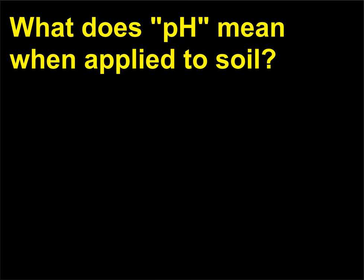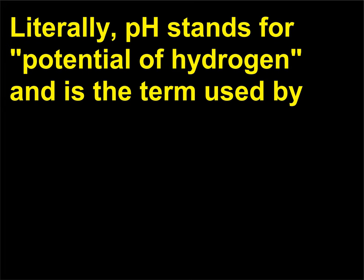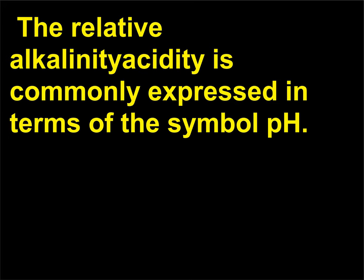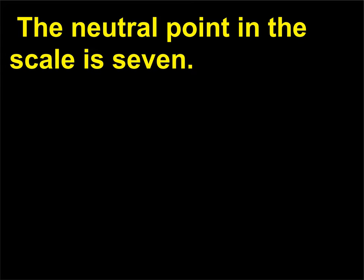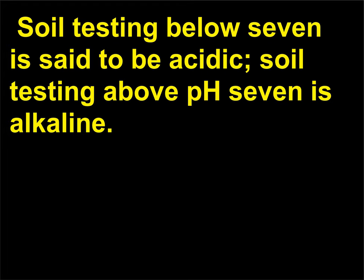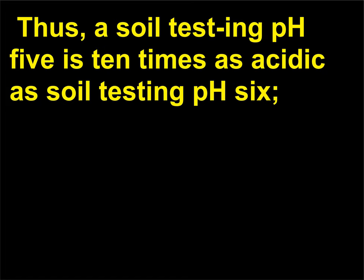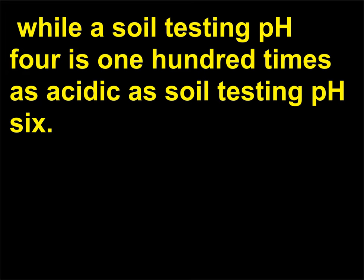What does pH mean when applied to soil? pH stands for potential of hydrogen and is the term used by soil scientists to represent the hydrogen ion concentration in a soil sample. The relative alkalinity or acidity is commonly expressed in terms of the symbol pH. The neutral point in the scale is 7; soil testing below 7 is said to be acidic, while soil testing above pH 7 is alkaline. The pH values are based on logarithms with a base of 10. Thus, a soil testing pH 5 is 10 times as acidic as soil testing pH 6, while a soil testing pH 4 is 100 times as acidic as soil testing pH 6.